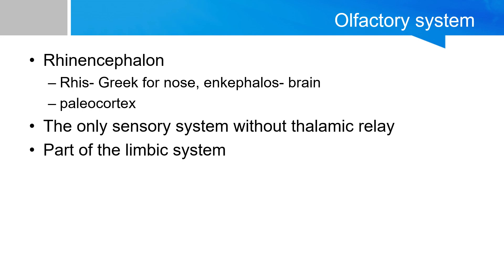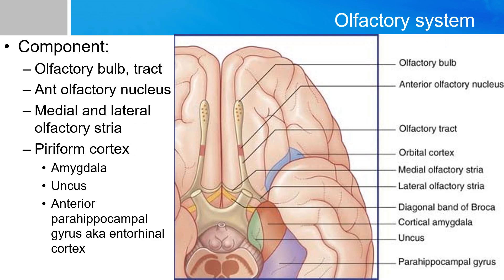Odors act directly on the limbic system because the rhinencephalon, or the sense of smell, is the only sensory system without a thalamic relay. As such, smells are capable of generating powerful emotions — such as when you're presented with a smell, it can directly elicit a vivid childhood memory.